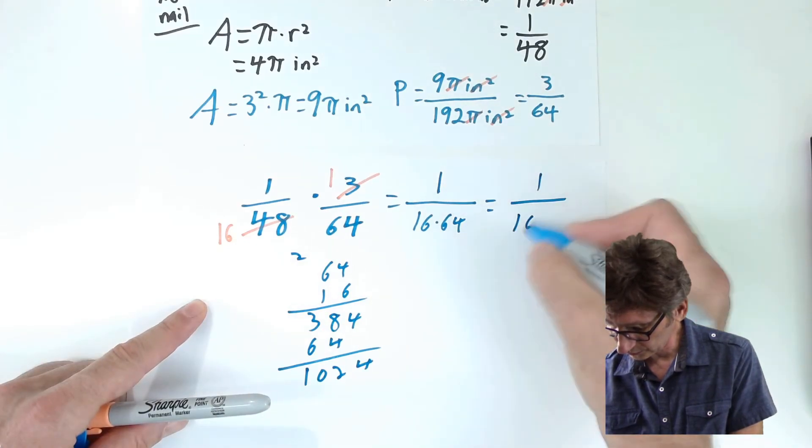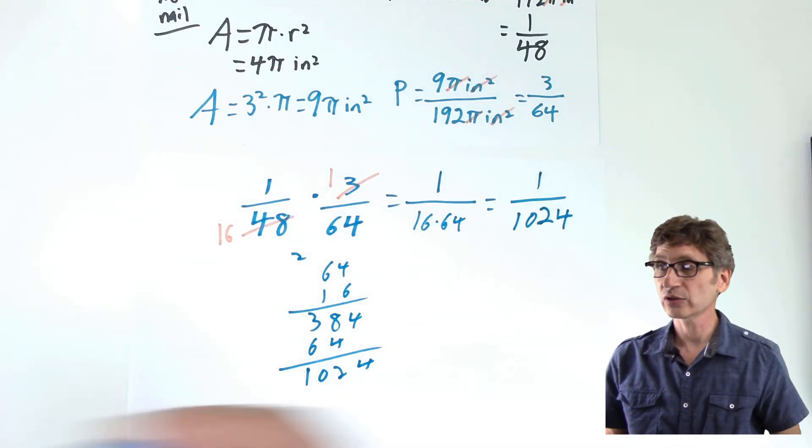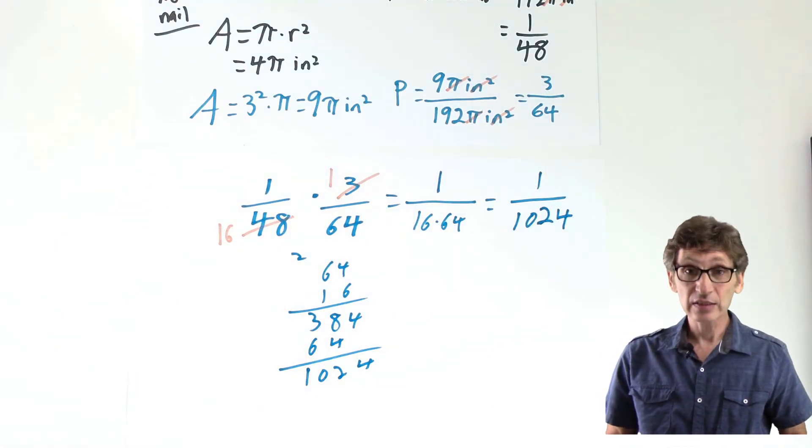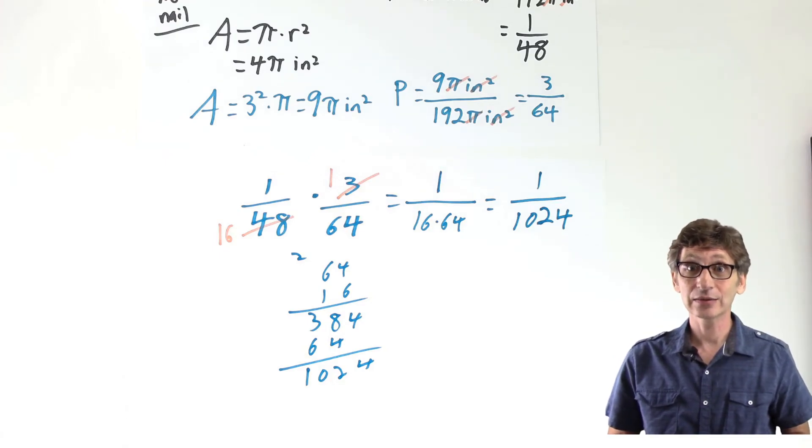1024. One over 1024. That's about a tenth of a percent. Not very likely that's going to happen, but it happened to me. Oh well. All right. Let's fix this thing.